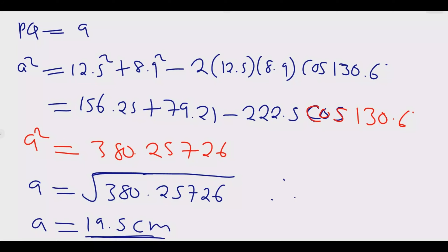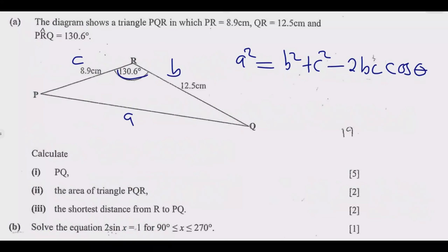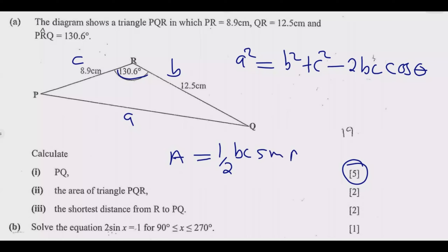Therefore PQ equals 19.5 centimeters. That should earn you five marks. For part (ii), the area of triangle PQR, we use the formula: Area equals half times B times C times sine of the included angle. The angle we are using is 130.6 degrees, with the two subtending sides being 12.5 and 8.9.